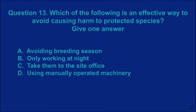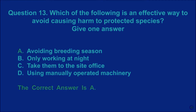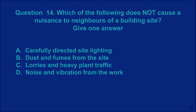Question 13: Which of the following is an effective way to avoid causing harm to protected species? Give one answer. A: avoiding breeding season. B: only working at night. C: take them to the site office. D: using manually operated machinery. The correct answer is A.